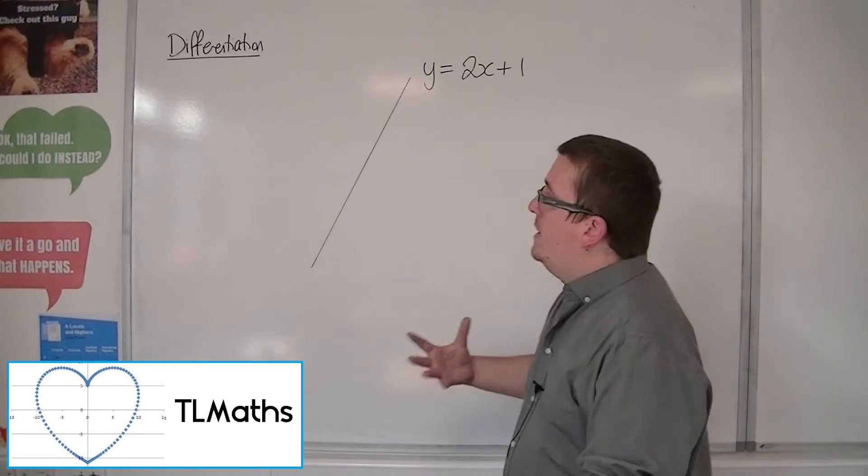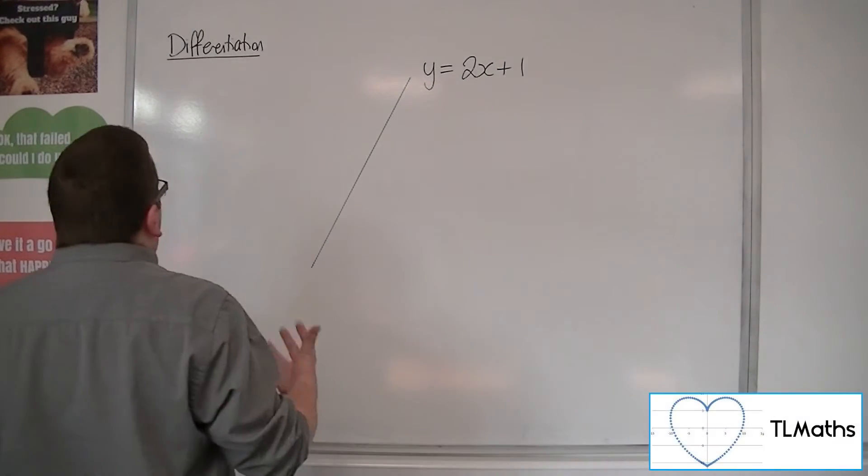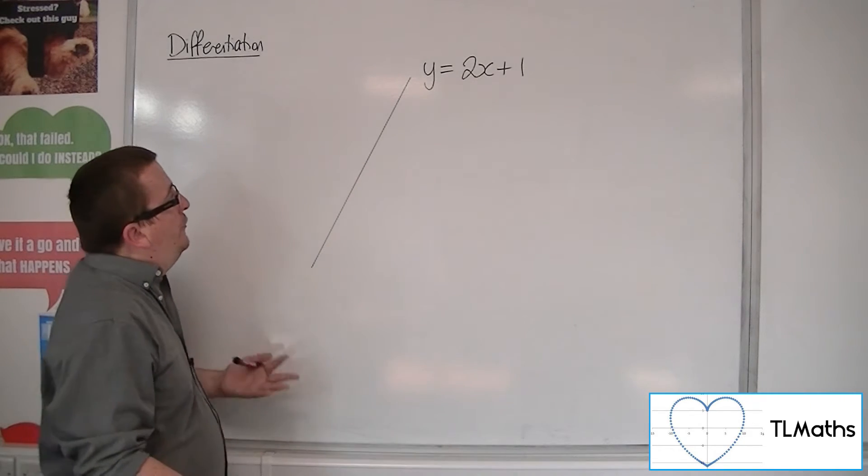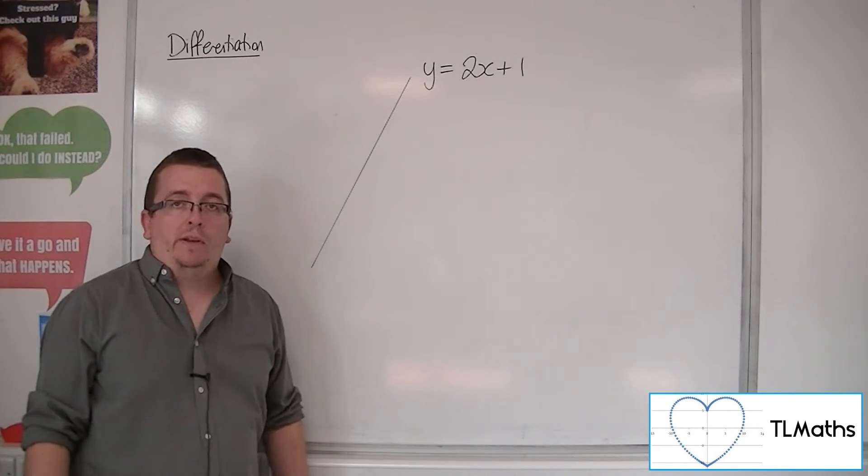The thing about straight lines is that their steepness doesn't change. It remains fixed. So here is a part of the line y equals 2x plus 1.